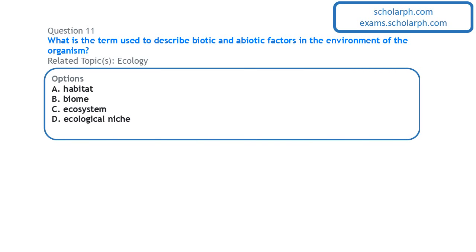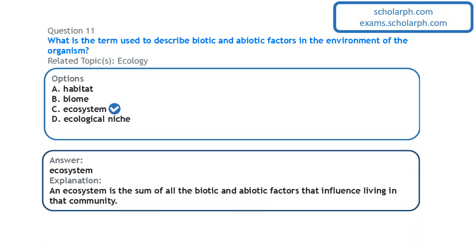Next question on ecology: the term used to describe biotic and abiotic factors in the environment of an organism is the ecosystem. The ecosystem is the sum total of all the biotic and abiotic factors that influence living things in a given community.